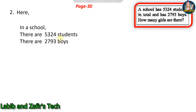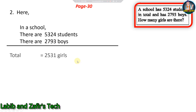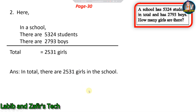Let's see the solution for problem two. In a school there are five thousand three hundred twenty-four students and two thousand seven hundred ninety-three boys. We have to subtract to find the girls. After subtracting, we get two thousand five hundred thirty-one girls. So in total there are two thousand five hundred thirty-one girls in the school.